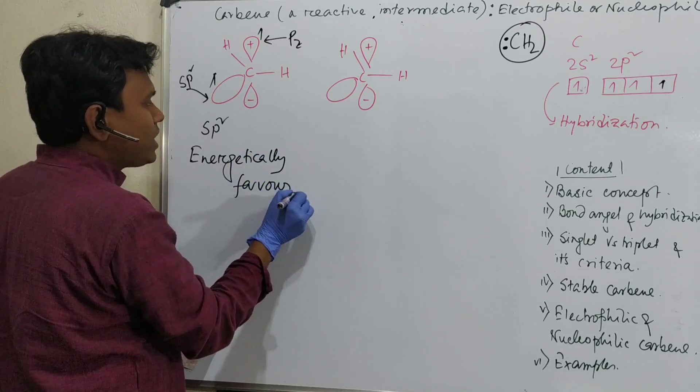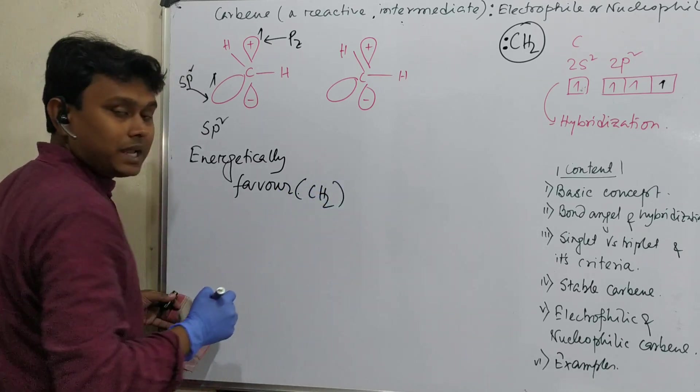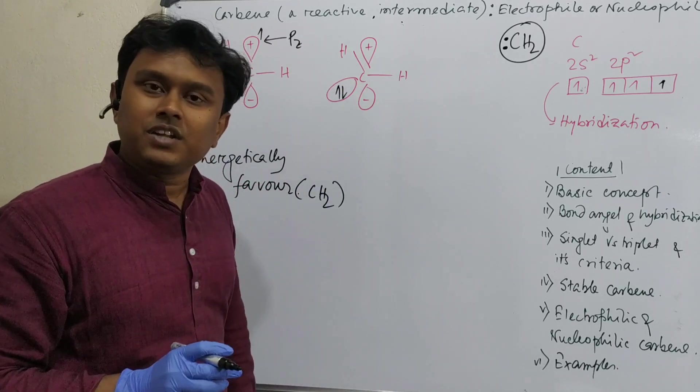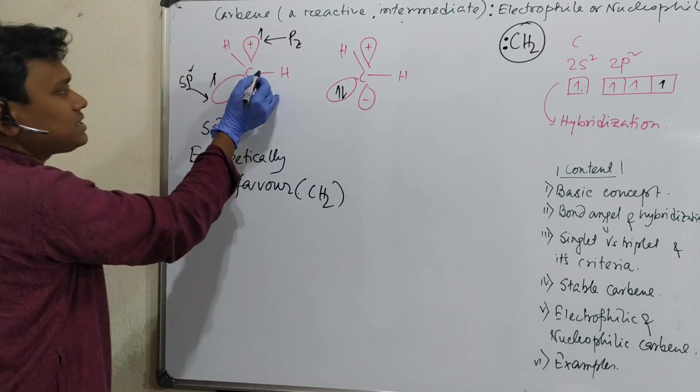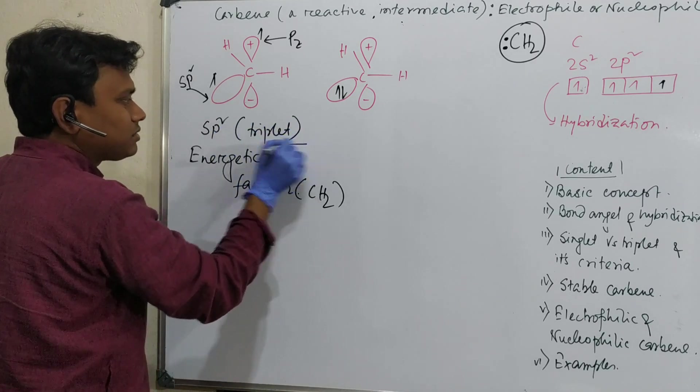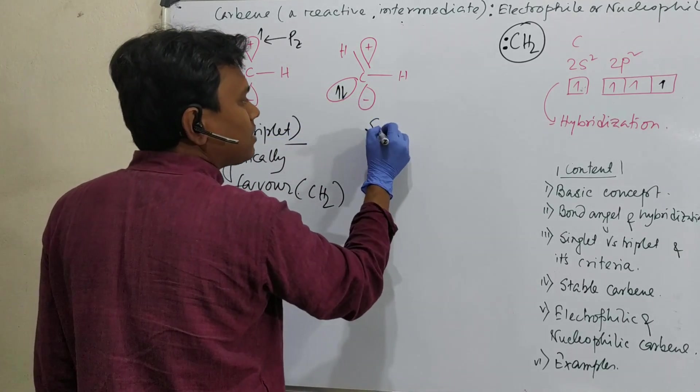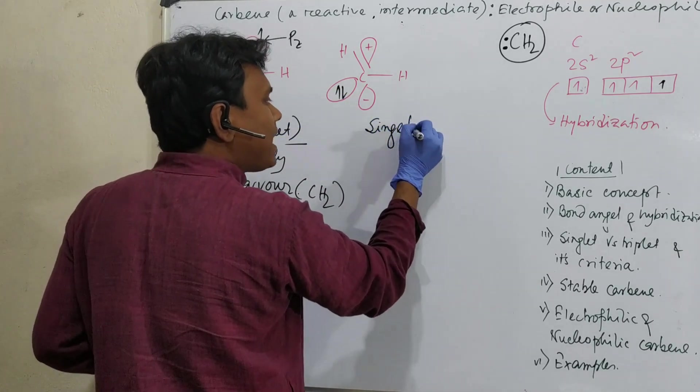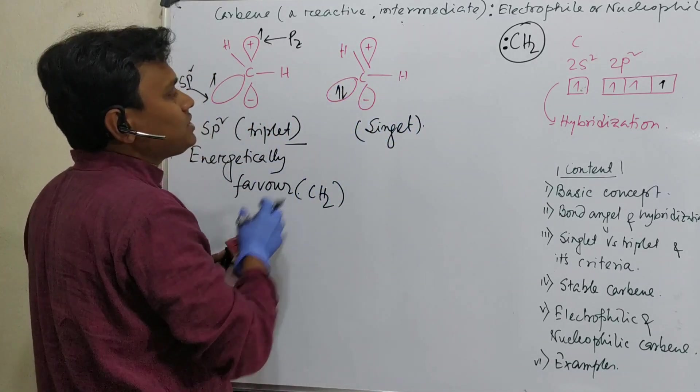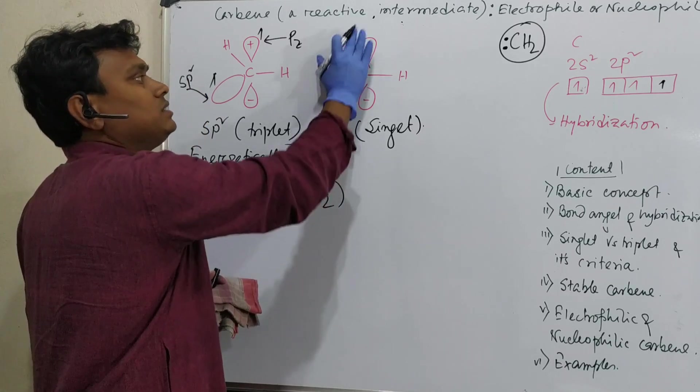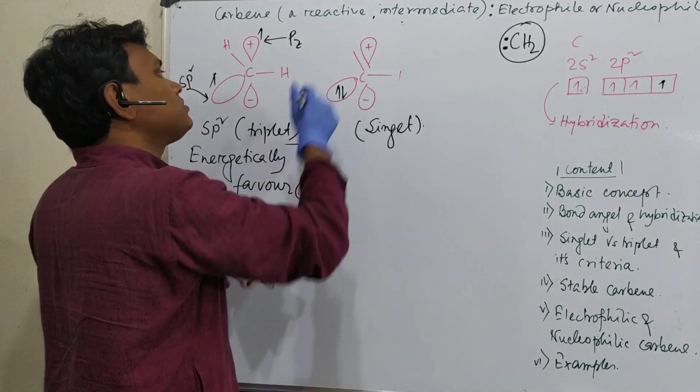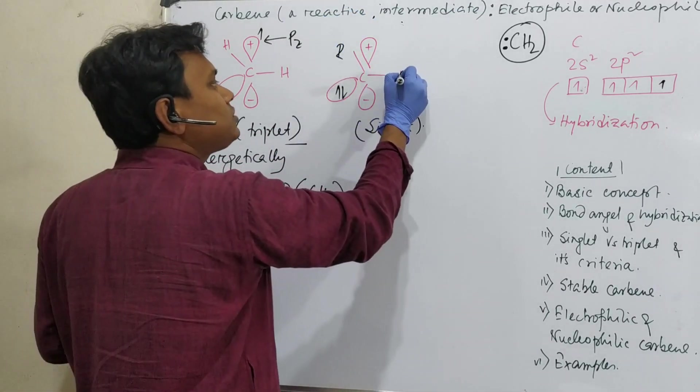We are discussing about CH2, please keep it in mind. But if we think about this, it is not energetically favored. Actually this is called triplet carbene. This is triplet and this is singlet. As I told, hydrogen cannot stabilize singlet. Why? Because there is some additional energy factor. So this must be stabilized by some substituents.